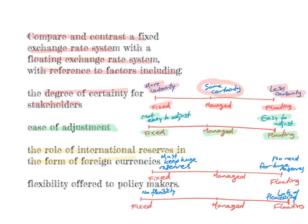The third factor is the role of international reserves. Countries maintaining a fixed exchange rate must keep a huge amount of foreign currency reserves because they are constantly buying and selling their own and foreign currencies to maintain that fixed rate. Countries with a floating exchange rate system don't need huge reserves because they're not interfering in the market. Keeping large reserves of foreign currencies comes at an opportunity cost — there's always a trade-off. Managed exchange rate systems again fall somewhere in the middle.